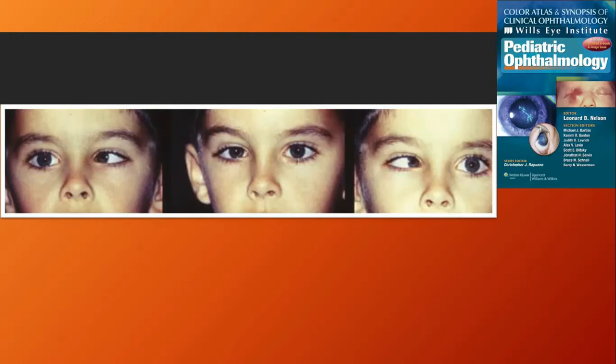This is a case of bilateral Duane Retraction Syndrome type 1, and it is isotropic Duane — the esotropia is manifested in the right eye. It is important to comment on alignment in the primary position and include it in your diagnosis.